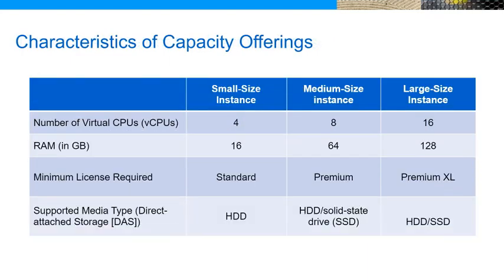A capacity pool license can be standard, premium, or premium XL. A standard license enables deployments of small-size instances only and is restricted to HDDs in direct-attach storage or DAS cases. Customers can enable higher performance by applying an ONTAP Select premium license instead. The premium license enables deployments of small- or medium-sized instances. This license also enables the use of HDDs or solid-state drives or SSDs and is required for NetApp ONTAP MetroCluster SDS deployments.